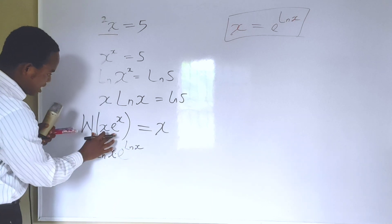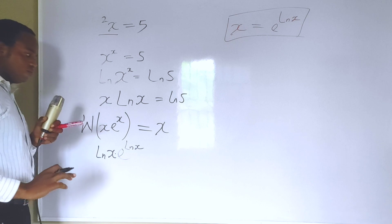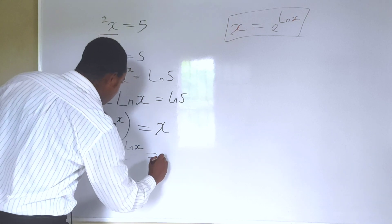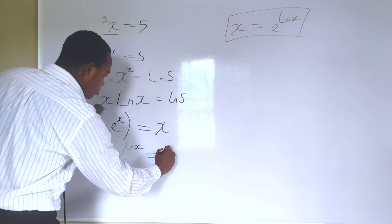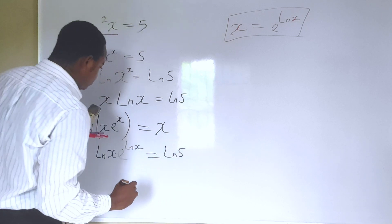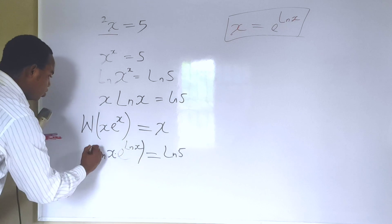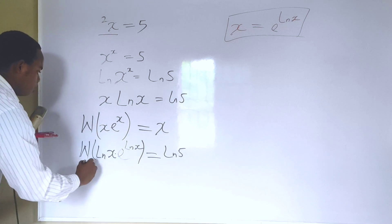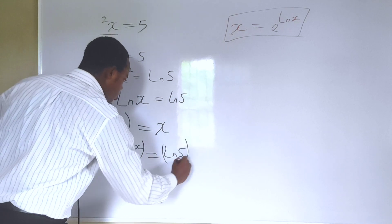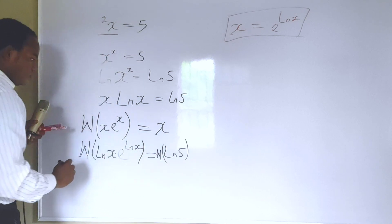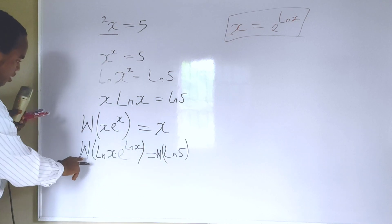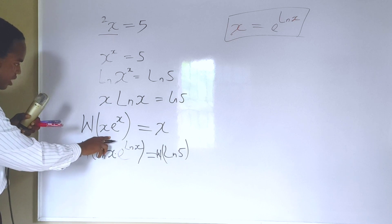You will notice that this is now in this form. On this side, I have the natural log of 5. So, what should I do next? Let us introduce the Lambert W function to both sides of the equation. At this point, recall here, when an expression is in this form, this part here is going to be the solution.